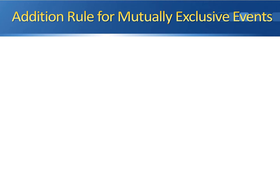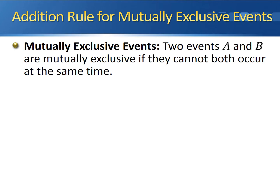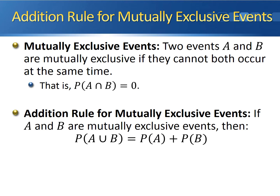The first rule we're going to define is the addition rule for mutually exclusive events. We talked about mutually exclusive events back in the first lecture on probability. Two events A and B are mutually exclusive if they cannot both occur at the same time. In probability terms, this means the probability of A and B — the probability of the intersection of the two events — is equal to zero. The addition rule for mutually exclusive events says: if A and B are mutually exclusive, then the probability of either A or B (or both) occurring — the probability of the union — is equal to the probability of A plus the probability of B.